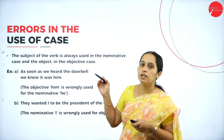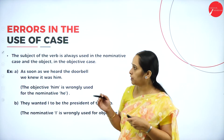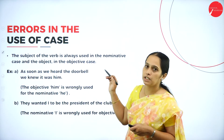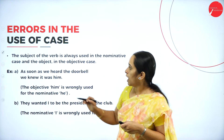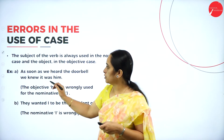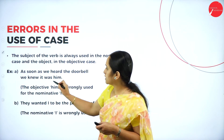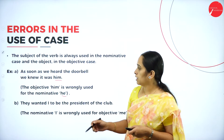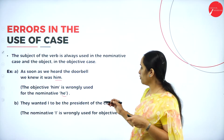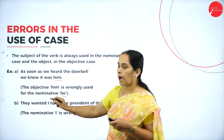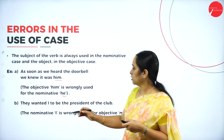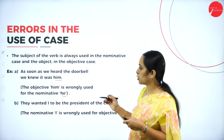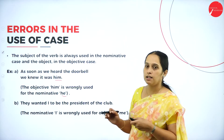Next, errors in the use of case — nominative case and objective case. The subject of the verb is always used in the nominative case and the object in the objective case. For example: 'As soon as we heard the doorbell, we knew it was him.' Here, the objective 'him' is wrongly used for the nominative 'he.' Another example: 'They wanted I to be the president of club.' Here the nominative 'I' is wrongly used for objective 'me' — correct is 'They wanted me to be the president of club.'